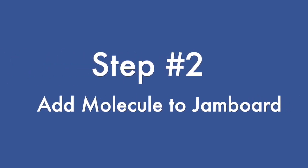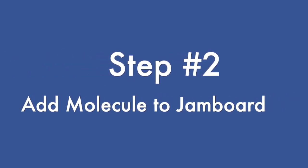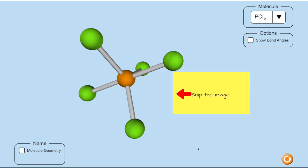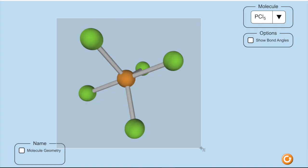When you've found one you like, you're ready to move to step two: adding the molecule to a Jamboard. To begin, snip the image using the snipping tool on your computer. For the Chromebook, that's Ctrl+Shift and the symbol over the number six.